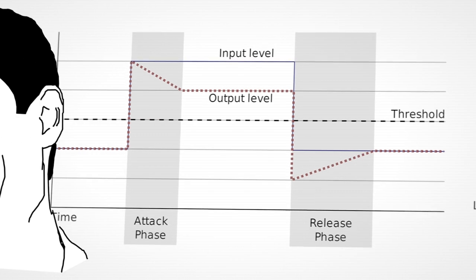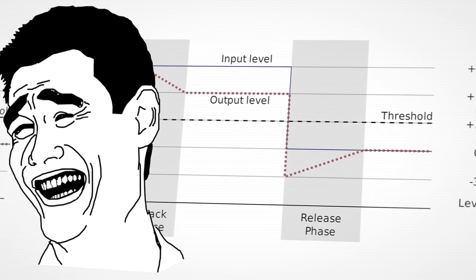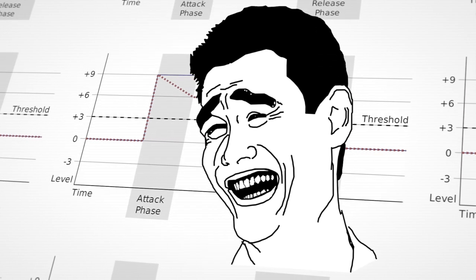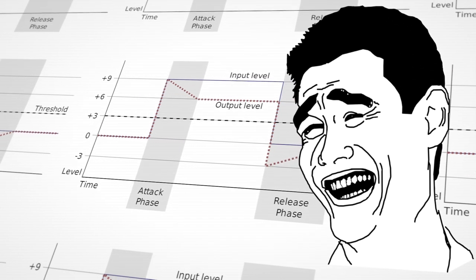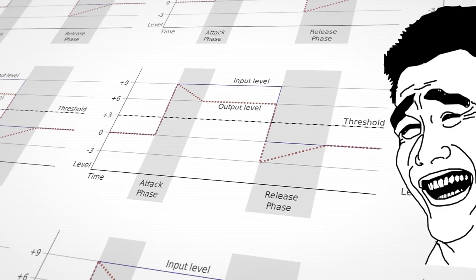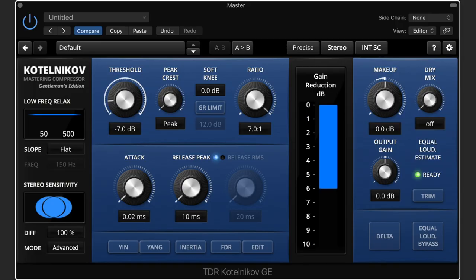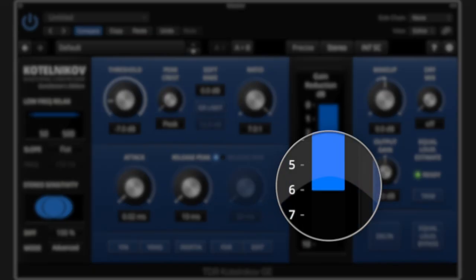Another popular misconception is the notion of distinct attack and release phases. But unless the compressor has an actual hold function, it's constantly modulating the signal during compression. That's why you can get intermodulation distortion even with a signal that appears to show steady gain reduction. The takeaway here is to think of attack and release as a game of tug of war — always pulling the signal towards the desired goal, never holding still.